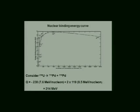If you ask what the Q value for that reaction is: take the mass of U-238 and subtract twice the mass of palladium-119. You can read it off the binding energy curve. The binding energy per nucleon of U-238 is about 7.6 MeV, so multiply that by 238. For palladium-119, it's about 8.5 MeV per nucleon — multiply that by 119, then by two because there are two of them. The difference gives a positive Q value of 214 MeV.